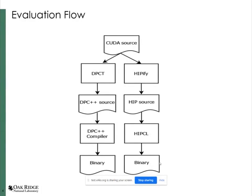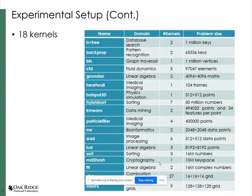The table lists applications from the Rodinia benchmark, the Shoc benchmark, and some proxy apps used in this work. These applications cover a wide variety of scientific domains. The number of kernels in the table indicates the number of distinct kernels executed at least once on a device. Problem sizes of the selected Rodinia benchmark applications are larger than or equal to the original sizes. All implementations are available in a public repository called oneAPI-DirectProgramming.